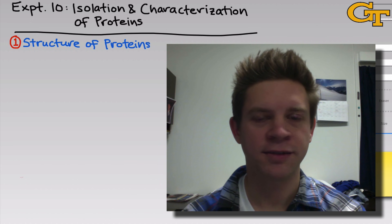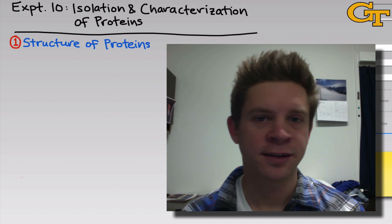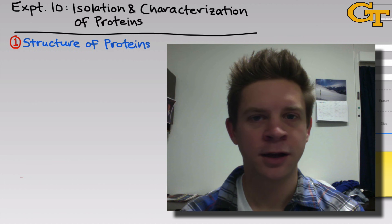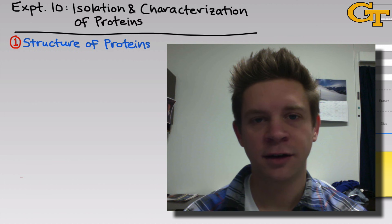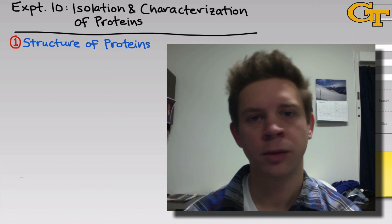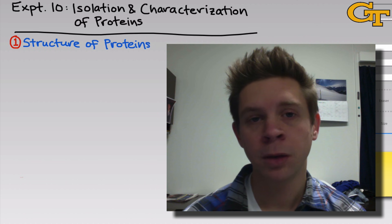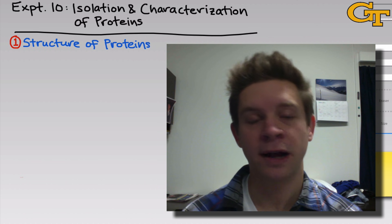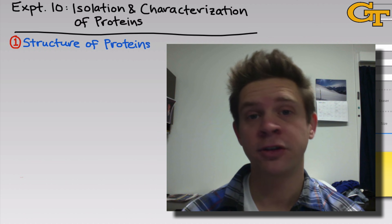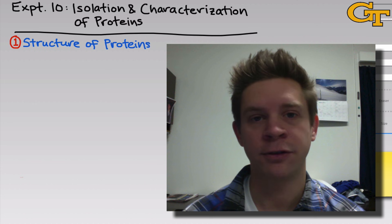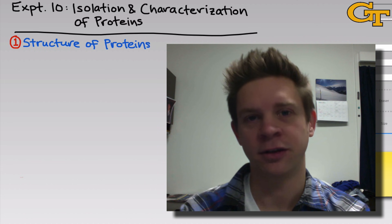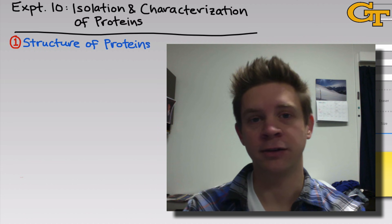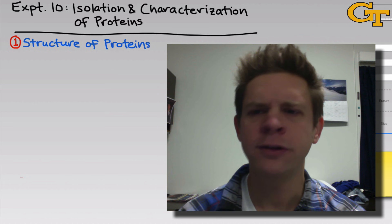Experiment 10 in CHEM 1211K is titled Isolation and Characterization of Proteins. In this experiment, we're going to explore one of the most important classes of biological macromolecules: proteins. Proteins are polymers of amino acids, and the structural diversity of amino acids gives rise to an enormous number of applications for proteins within our cells.